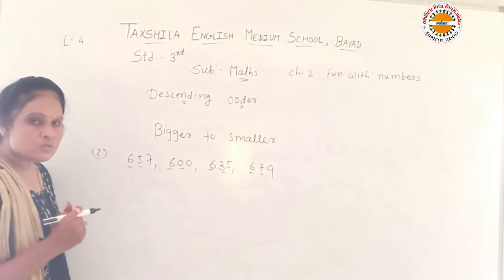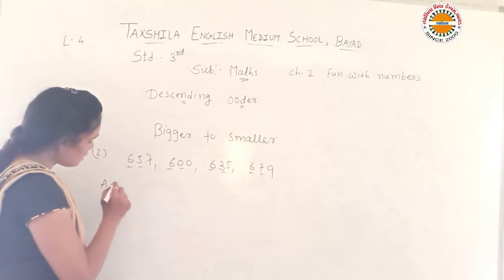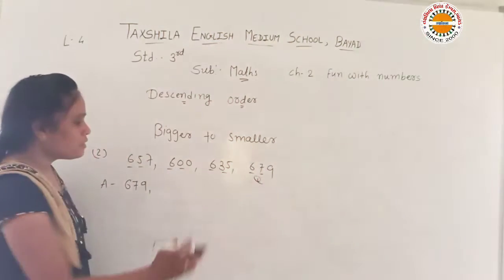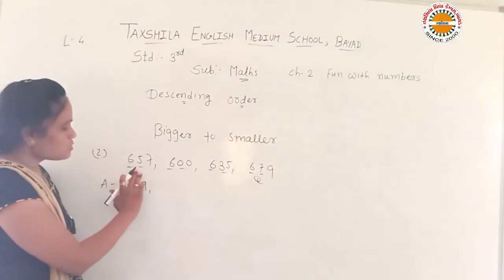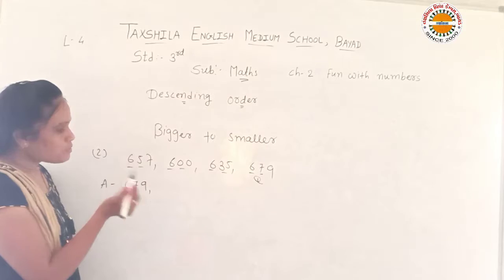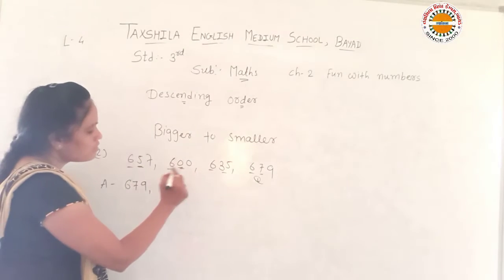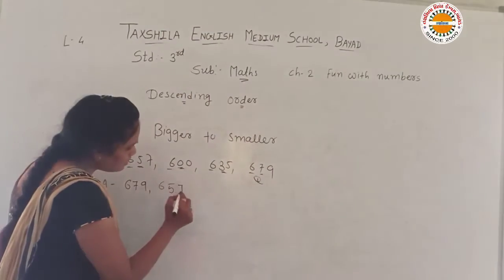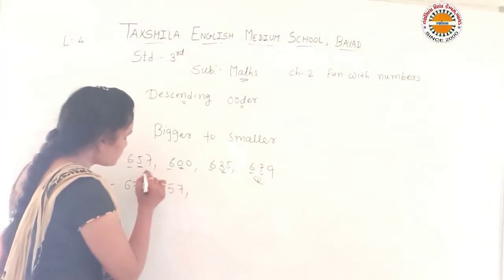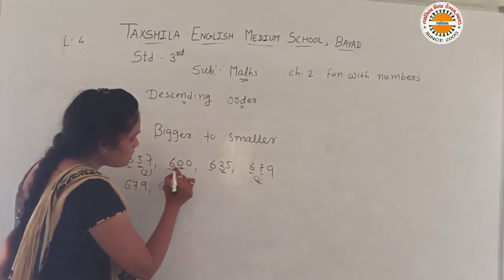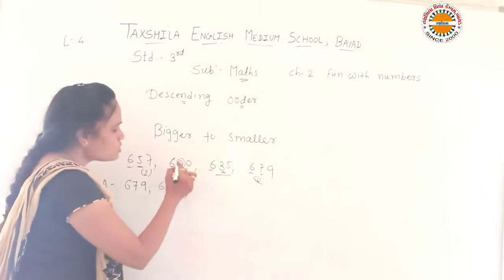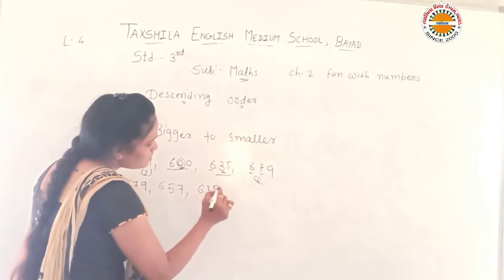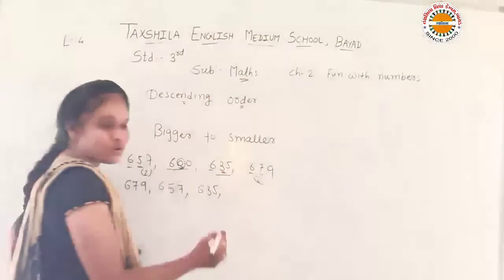Now let's find the biggest number. 679 — this number has the biggest tens digit. So 679 goes first. Then we compare the remaining: 657 and 634 and 600. The result is 679, 657, 634, 600.